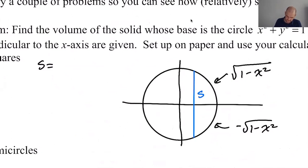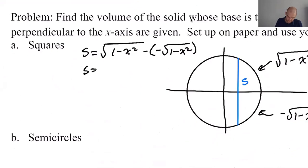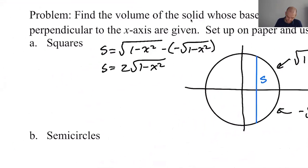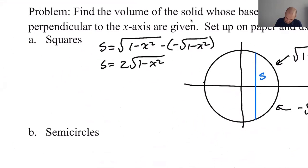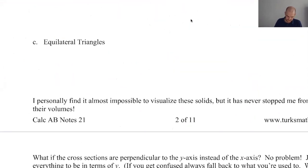So S right here. So S is going to be top takeaway bottom. So it's radical one minus x squared minus negative radical one minus x squared, which is two root one minus x squared. All right. And then where are we going? We're going from negative one to one. I think we're basically done with this whole problem.